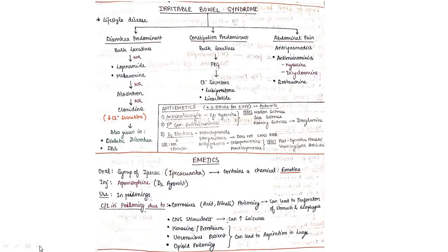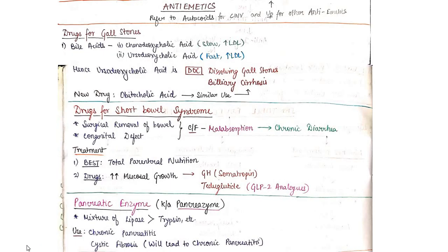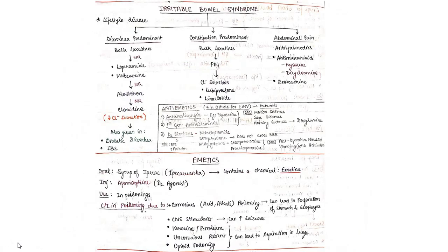This was our discussion on drugs targeting treatment for constipation and diarrhea. Now let's discuss irritable bowel syndrome (IBS). This is a lifestyle disorder - diarrhea predominant, constipation predominant, or abdominal pain predominant. Divided into three groups based on the symptom.